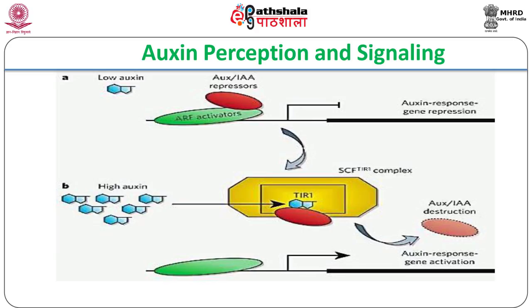When auxin binds to TIR1, the latter targets Aux/IAA proteins to the ubiquitin E3 ligase complex for ubiquitination and subsequent degradation. Removal of Aux/IAA repressors enables the ARF activators to bring about transcription of auxin response genes.